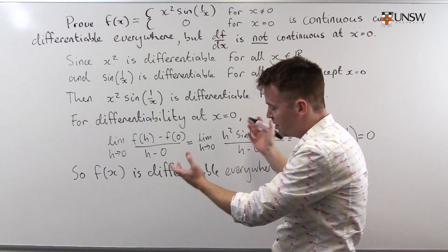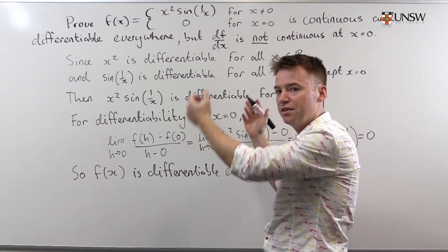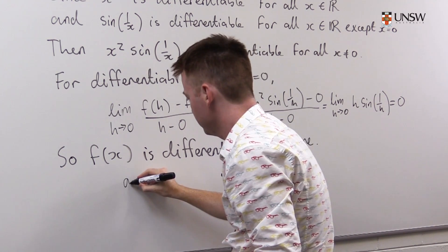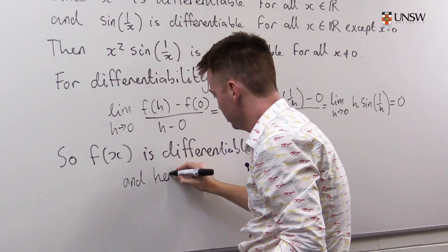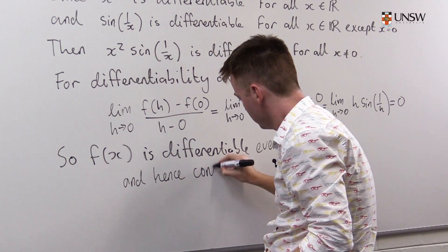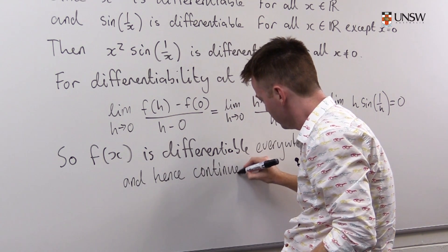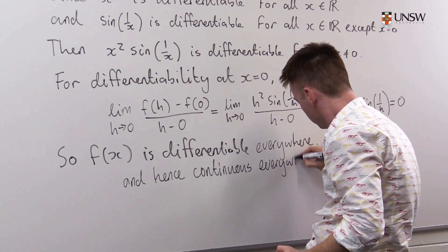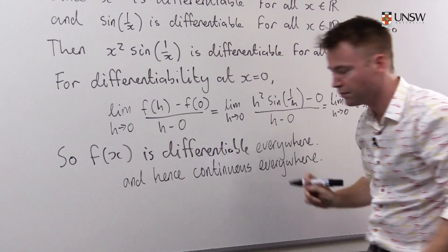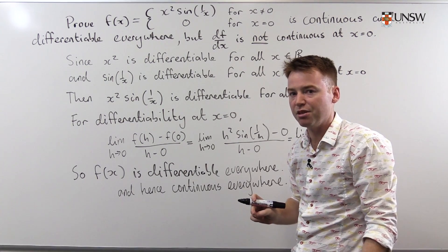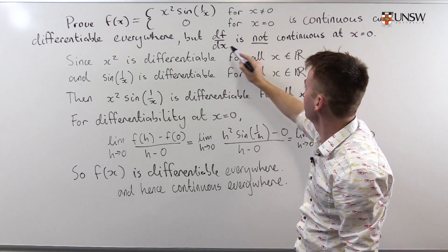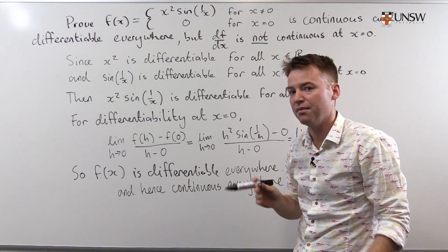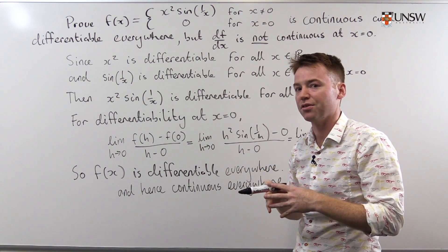The function is differentiable everywhere. And because it's differentiable everywhere, it's also continuous everywhere. We are now in a position to talk about df/dx, which we know exists for all x, but as we're about to find out, it's not continuous.